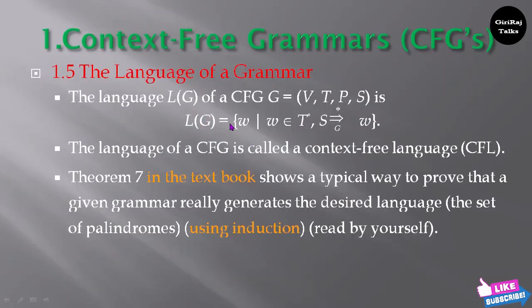So from this, the language L of G equals the set of W such that W belongs to T*, and S derives W (written as S gives rise to star G W). T* means T is the set of terminals, and you can use any number of those terminals. So the start variable S begins from the set of terminals with the grammar, and at the final step you will reach one string.